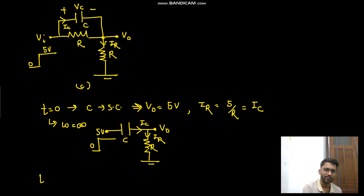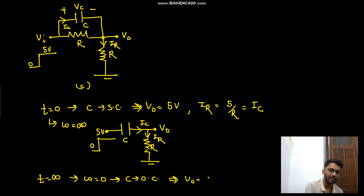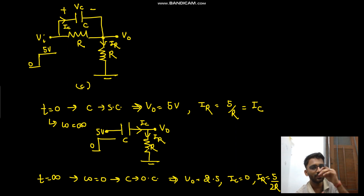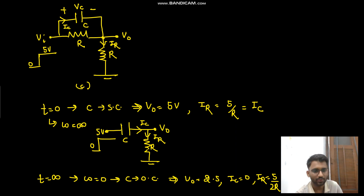At t=∞, omega goes to zero, so the capacitor is open-circuited. V_node becomes 2.5V, ic equals zero amperes, and ir equals 5/2R. The real meaning of steady state is that the capacitor current equals zero — when no current flows, there is no further charging or discharging, so we have reached steady state.